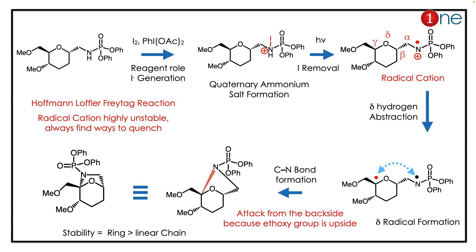By looking at the nitrogen and the possibility of iodination, you might realize it's a Hofmann-Löffler reaction. The first step of the reaction is N-iodide formation, which gives a quaternary ammonium salt. Then you shine light — the light creates a radical cation, which is highly unstable and highly reactive, so it has to be quenched. It quenches by converting into the cyclic product via gamma hydrogen abstraction.